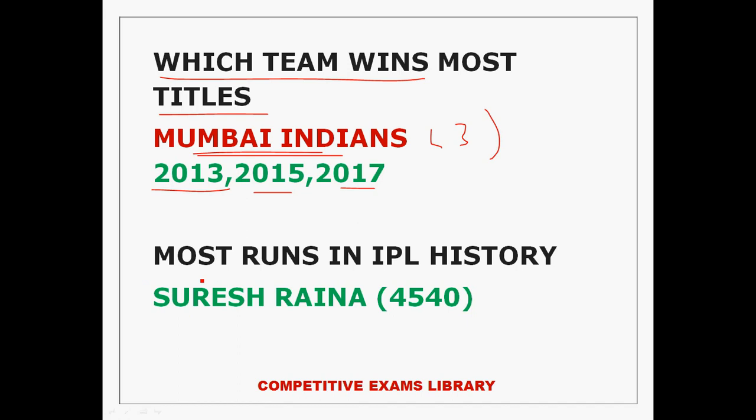In the history of IPL, the most runs scorer is Suresh Raina, with 4,540 runs. The second place is Virat Kohli. So most runs in IPL history is Suresh Raina.